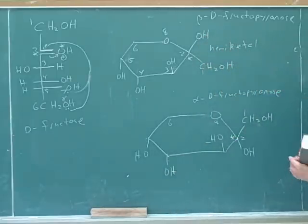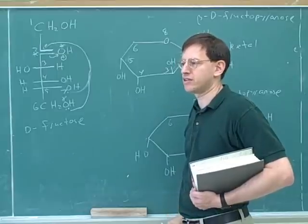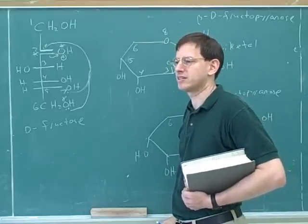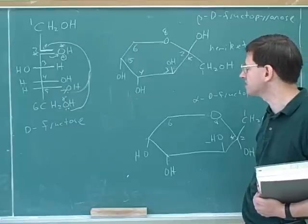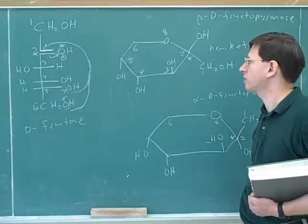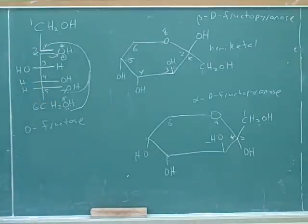So this is a hemiketal. The cyclic forms of monosaccharides are either hemiacetals or hemiketals because they're formed by a single alcohol attack on an aldehyde or ketone. Again, the big lesson of today is just like peptides and amino acids was just an application of carboxylic acid derivative chemistry, sugars are just an application of aldehyde and ketone chemistry.